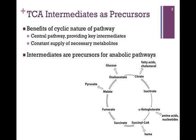Let's first consider the benefits of the cyclic nature of the pathway alluded to in an earlier lesson. Remember, it's a central pathway and provides key intermediates for both anabolic and catabolic pathways. Therefore, we need a constant supply of those metabolites. It is the cyclic nature of the pathway that provides us with those metabolites — in other words, the pathway is self-perpetuating, so we have that constant supply we need.